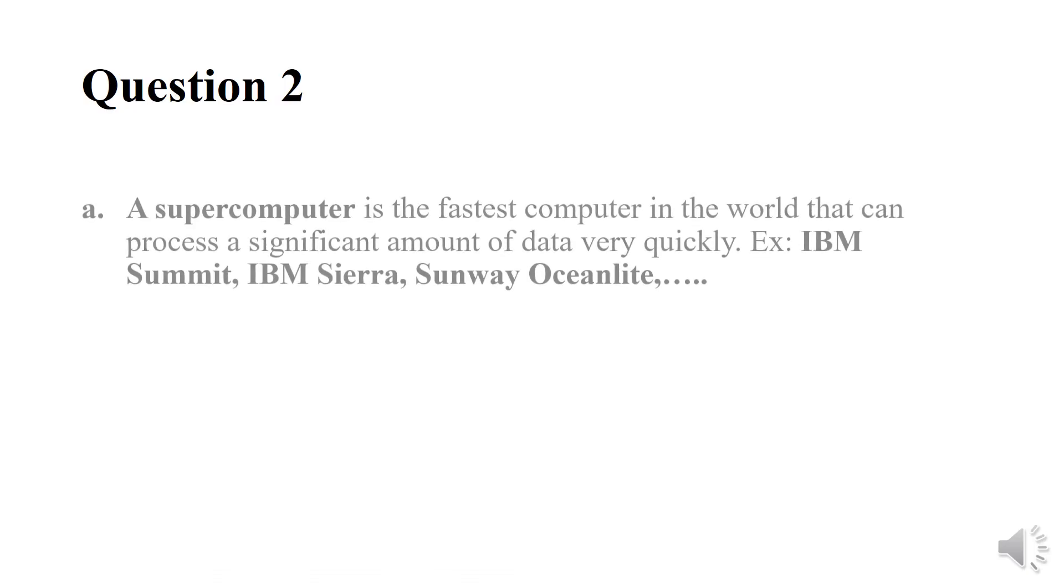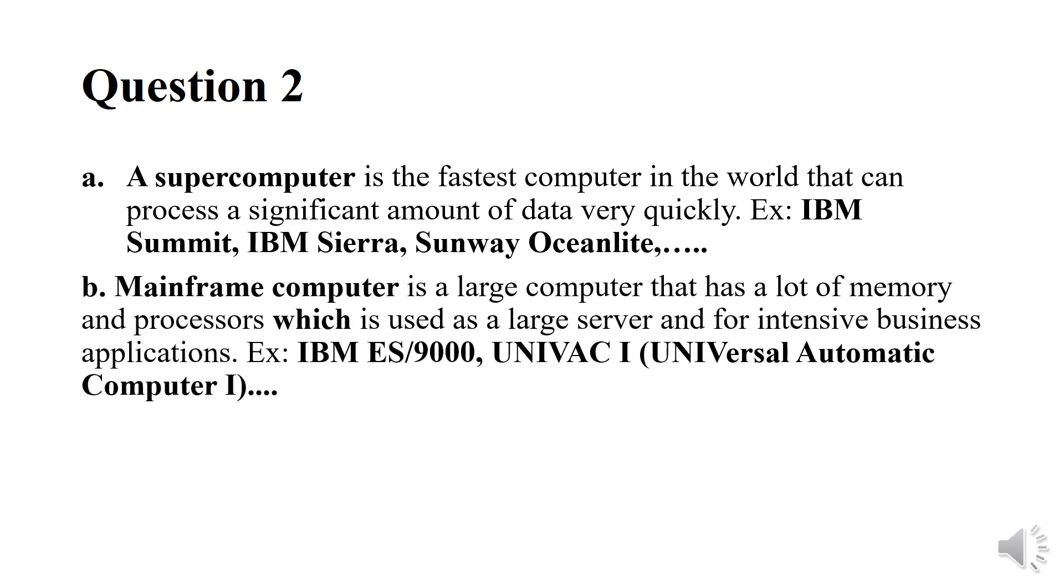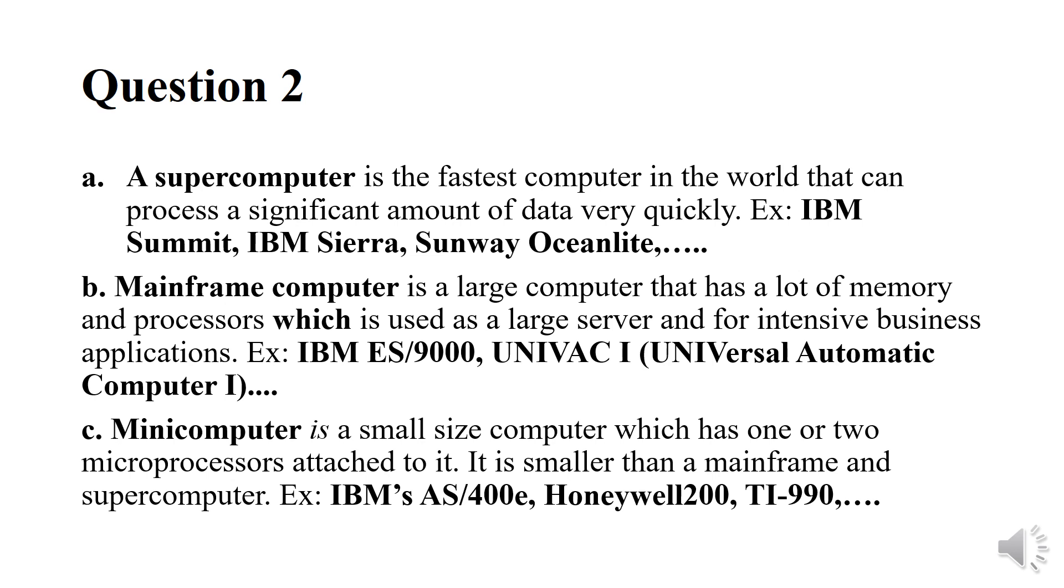Question number two. A. A supercomputer is the fastest computer in the world that can process a significant amount of data very quickly. Example: IBM Summit, IBM Sierra and so on. B. Mainframe computer is a large computer that has a lot of memory and processes which is used as a large server and for intensive business applications. Example: IBM ES-9000. C. Minicomputer is a small size computer which has one or two microprocessors attached to it. Example: IBM AS-4000E.